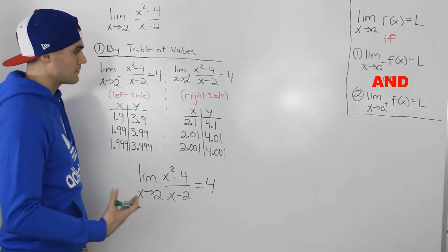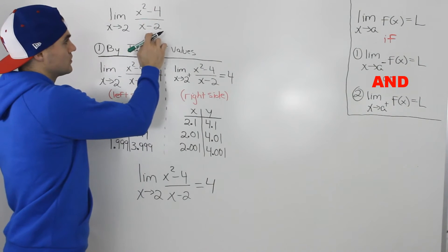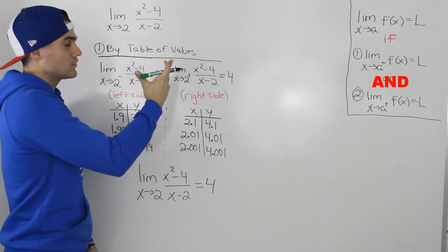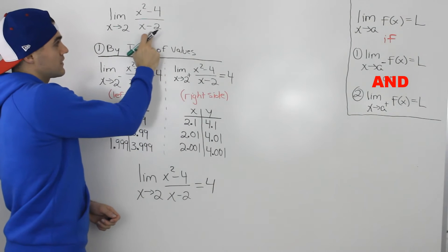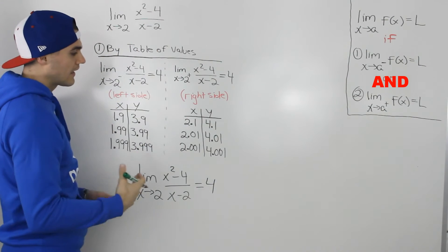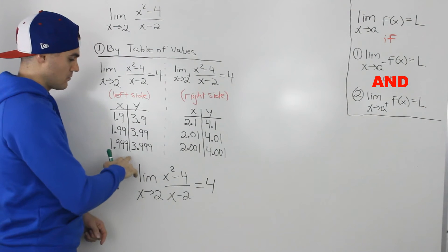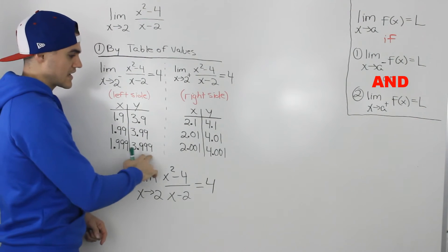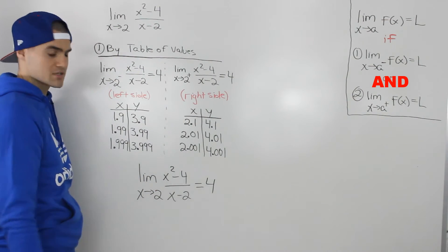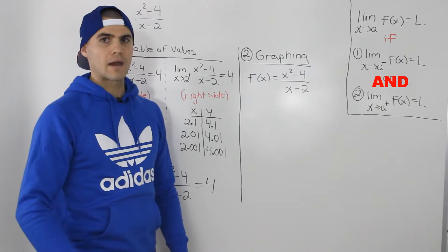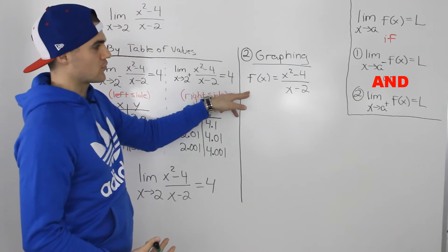Now, as I mentioned at the beginning, we couldn't just plug in 2 into this function because at an x value of 2, this function is undefined. Hence, why we had to approach 2 from both the left side and the right side and see what y values the function is approaching. A second way to solve this limit is through graphing.